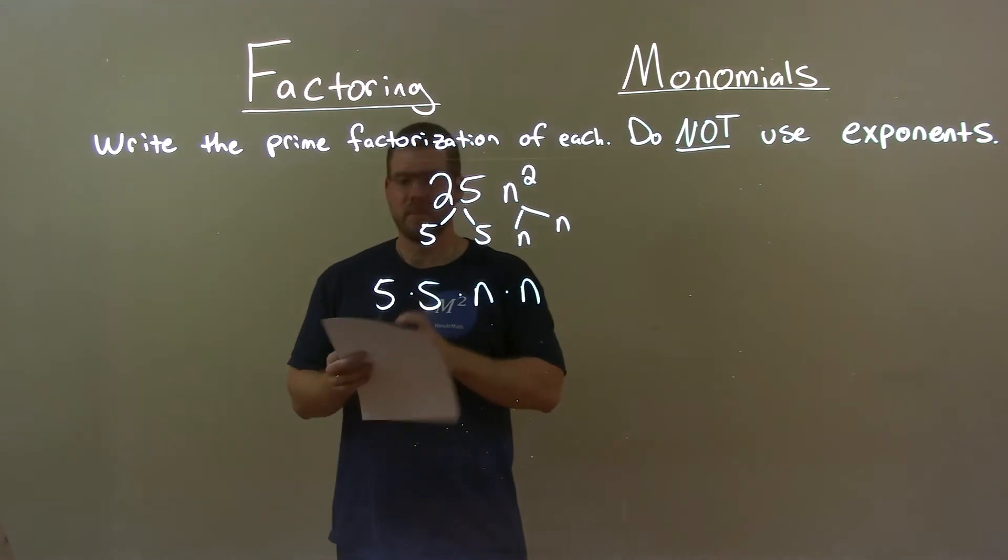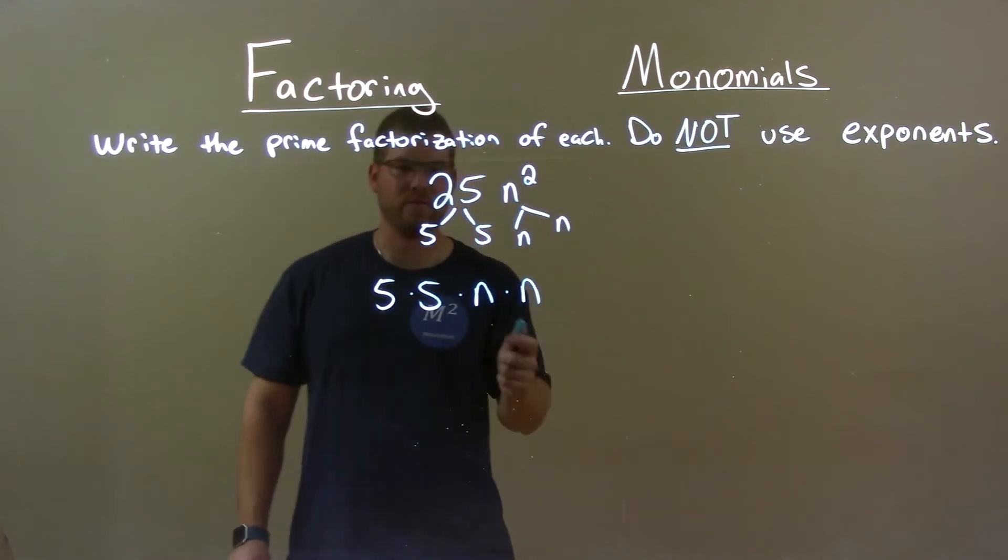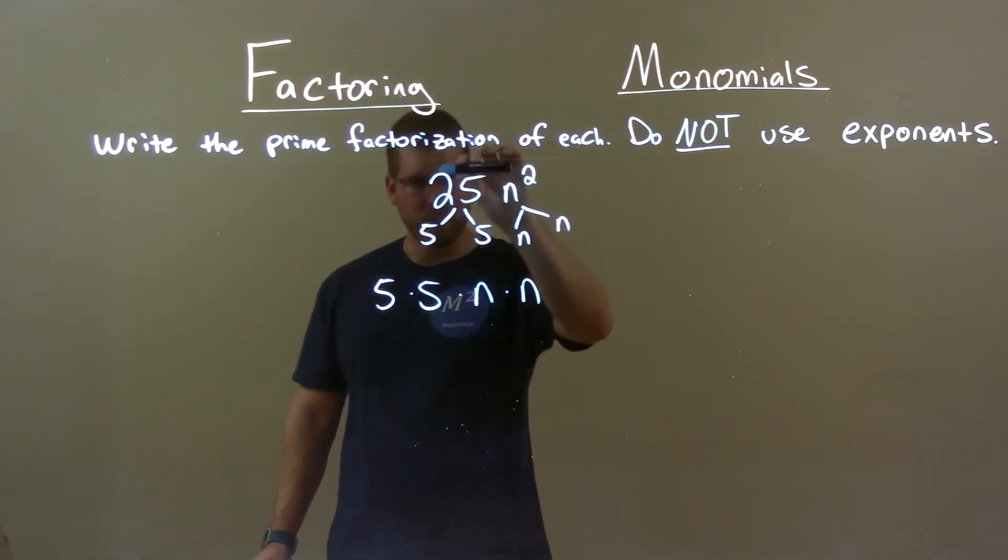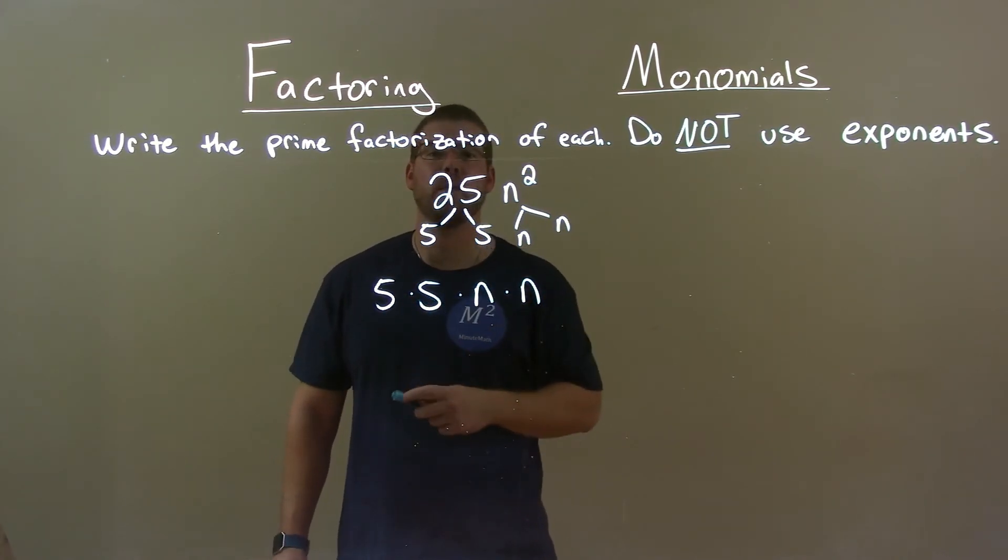Quick recap. We're given 25n squared, and we have to factor this without exponents. So, 25 is 5 times 5, n squared is n times n. Our ending result is 5 times 5 times n times n.